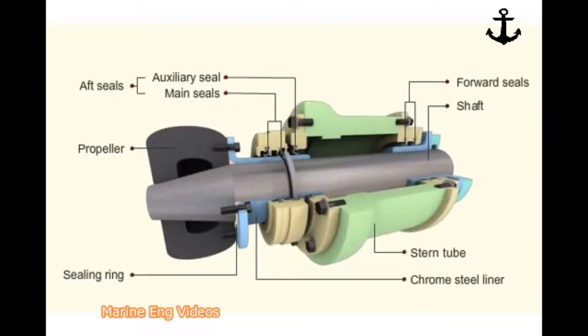The elastic lip of each nitrile rubber seal grips the short chrome steel liners. Chrome steel liners are located at aft and forward ends of the propeller shaft. They act as rubbing surfaces for lip seals. The liner at the aft end protects the steel shaft from seawater and corrosion.